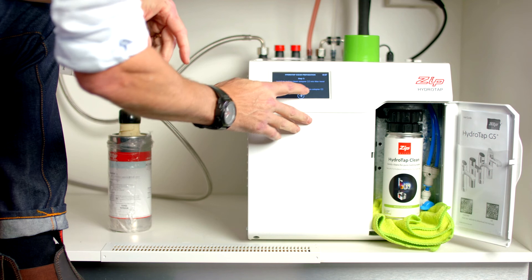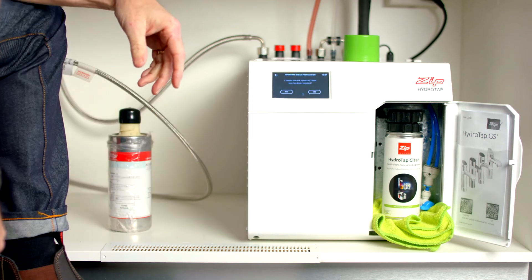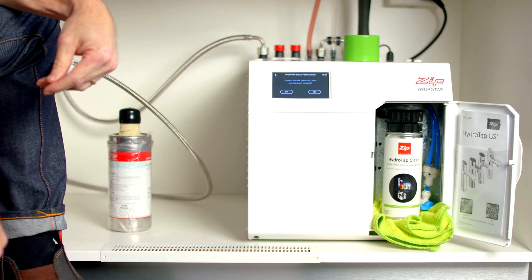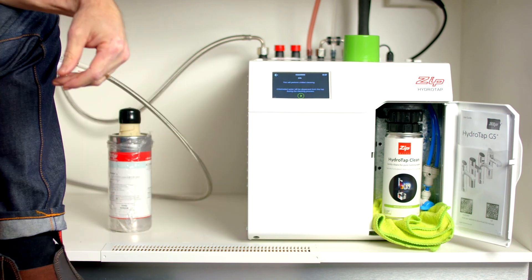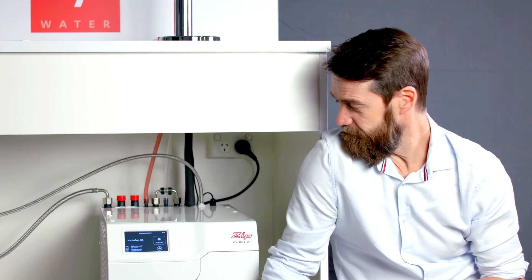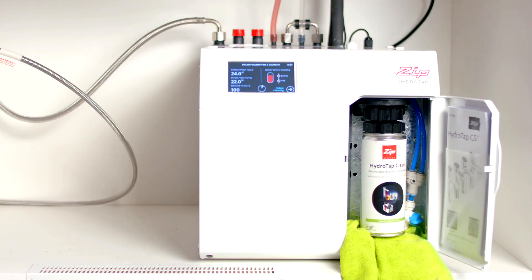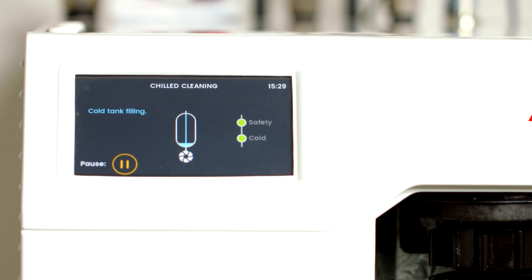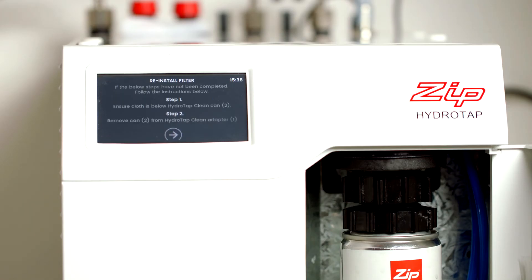Press the next arrow and the next screen wants you to confirm you've fitted the HydraTap clean can and you're ready to start the commissioning process. Next, the HydraTap will need to calibrate. Press the play symbol to start the process. At the bottom of the screen there's an arrow button to take you to the chilled cleaning screen. This will show you a picture of the tank and the solenoids inside the HydraTap. This will open and close during the process. Once the flush has been completed, the HydraTap will ask you to remove the HydraTap clean can and adapter.